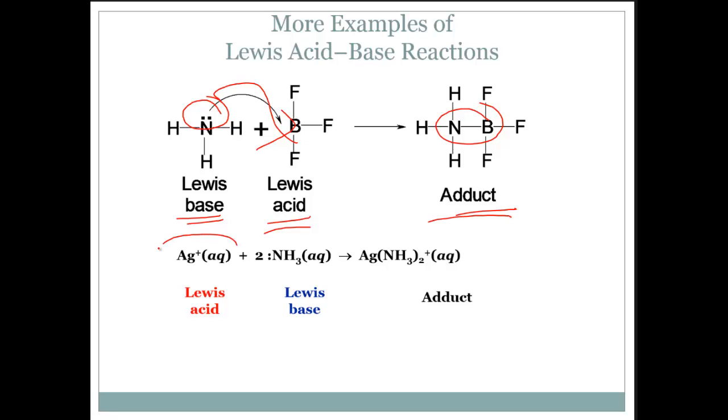One more example. We have silver with a positive charge. Two NH3 groups. So they have two pairs of electrons there, so one on one side, one on the other, to form Ag(NH3)2.